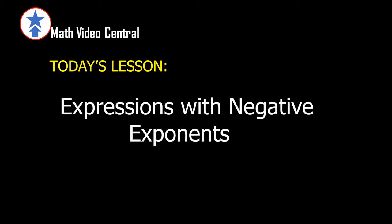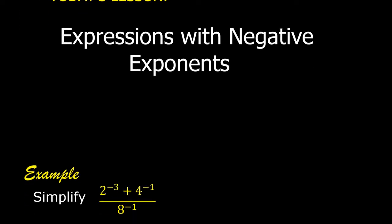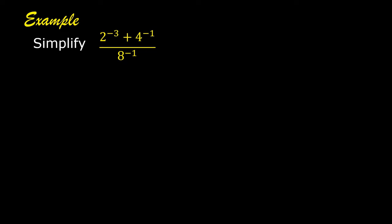Today's lesson is how to simplify expressions with negative exponents. Example: Simplify 2 raised to the exponent of negative 3 plus 4 raised to the exponent of negative 1, divided by 8 raised to the exponent of negative 1.